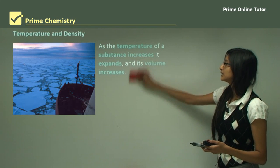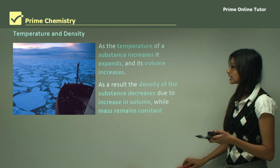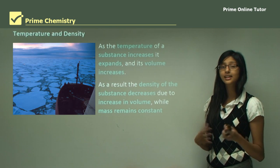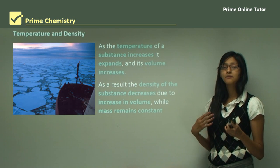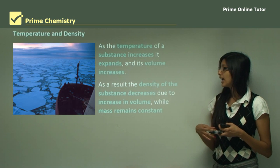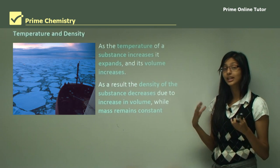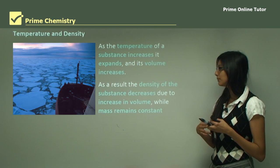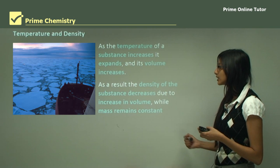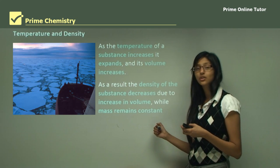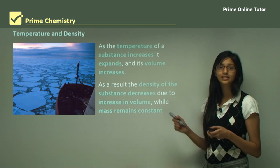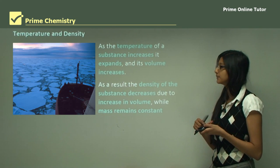So as a result, the density of a substance decreases. Volume and density are inversely proportional, and therefore density decreases due to the increase of volume while the mass remains constant. You need to ensure that mass remains constant for volume and density to correlate with each other.